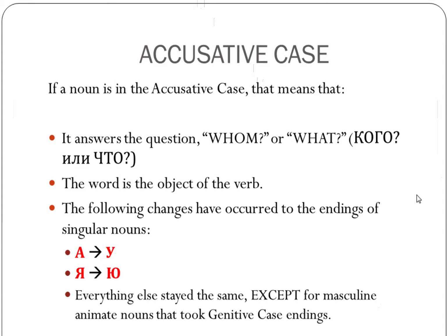So, to summarize: Я changes to Ю, И changes to У, everything else stays the same — except for masculine animate nouns that take the genitive case endings. We're going to discuss some examples (примеры) that sometimes confuse students.